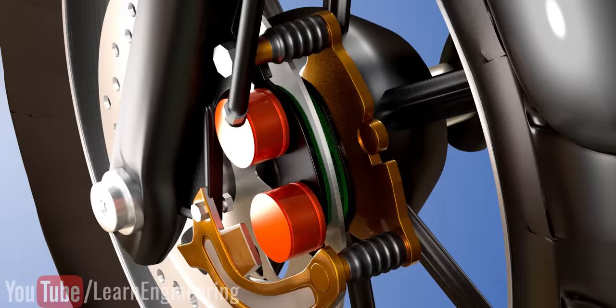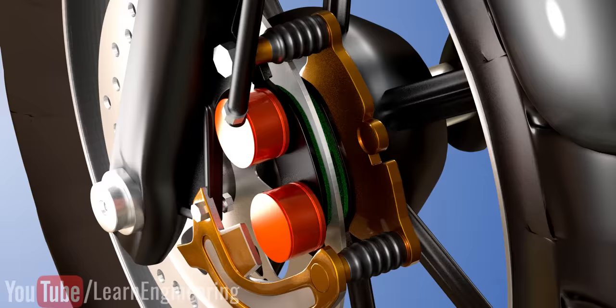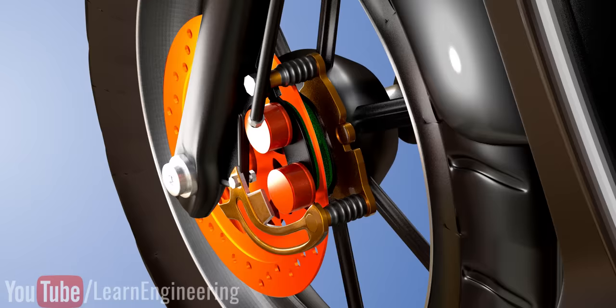Due to the friction between the disc and the brake pads, a huge amount of heat is generated and the disc gets extremely hot. In motorcycles, the disc's temperature can be controlled because of the air circulation around it.